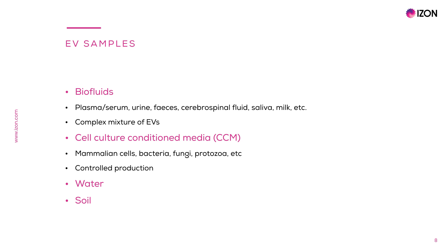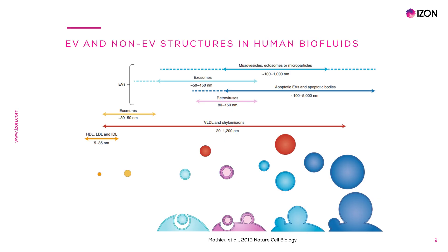Another well-used EV sample type is that produced by lab cell culture. Many different types of cells can be cultured in vitro, like mammalian cells, bacteria and fungi. An advantage of EVs produced by cultured cells is that the production process can be controlled and optimized to meet different downstream outcomes. Here is an example of the complexity of human biofluid samples regarding the presence of non-EV structures that overlap in the size range of EVs, leading to potential contamination of EV samples depending on the EV isolation method.